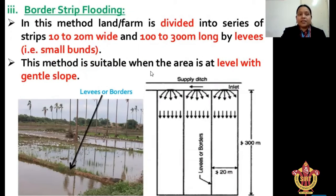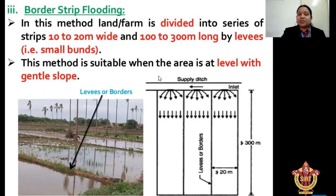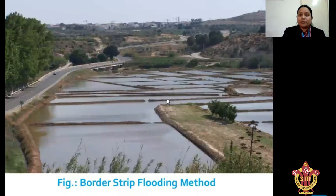Next is border strip flooding. In this method, the land or farm is divided into a series of strips, 10 to 20 meters wide but not greater than 20 meters, and 100 to 300 meters long but not greater than 300 meters, separated by levees. This method is suitable when the area is level with a gentle slope. The entire area is divided into a number of strips as shown in the diagrams.